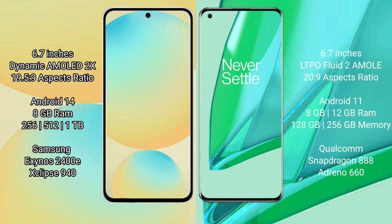Samsung Galaxy S24 FE runs on Android 14 operating system. OnePlus 9 Pro runs on Android 11 operating system. Samsung Galaxy S24 FE comes with 8GB RAM and 128GB, 256GB, or 512GB internal storage options, powered by the Samsung Exynos 2400E processor.